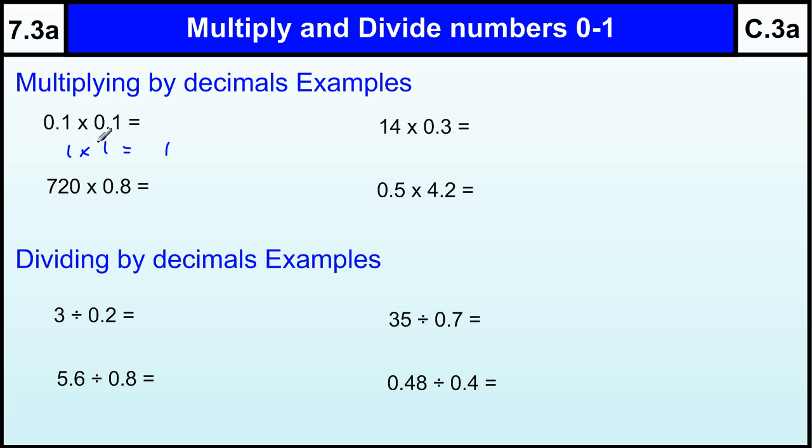Now there's a quicker way of doing that. The quick way is to count how many decimal places you've got in your question. I've got 1 decimal place here, 1 decimal place here, so there are 2 numbers after the decimal place.